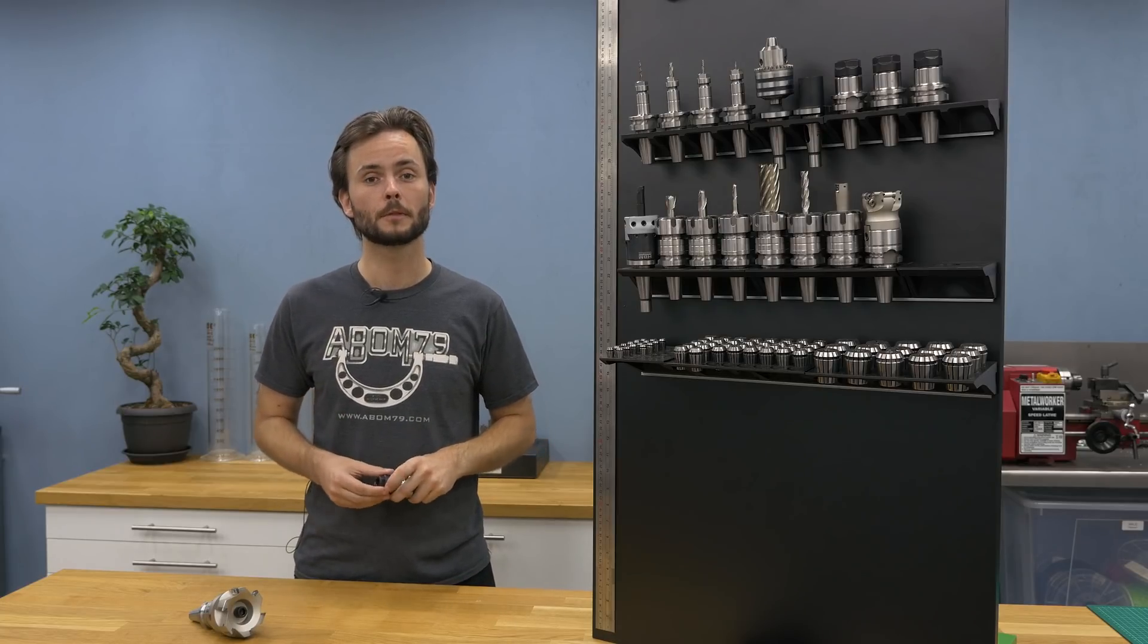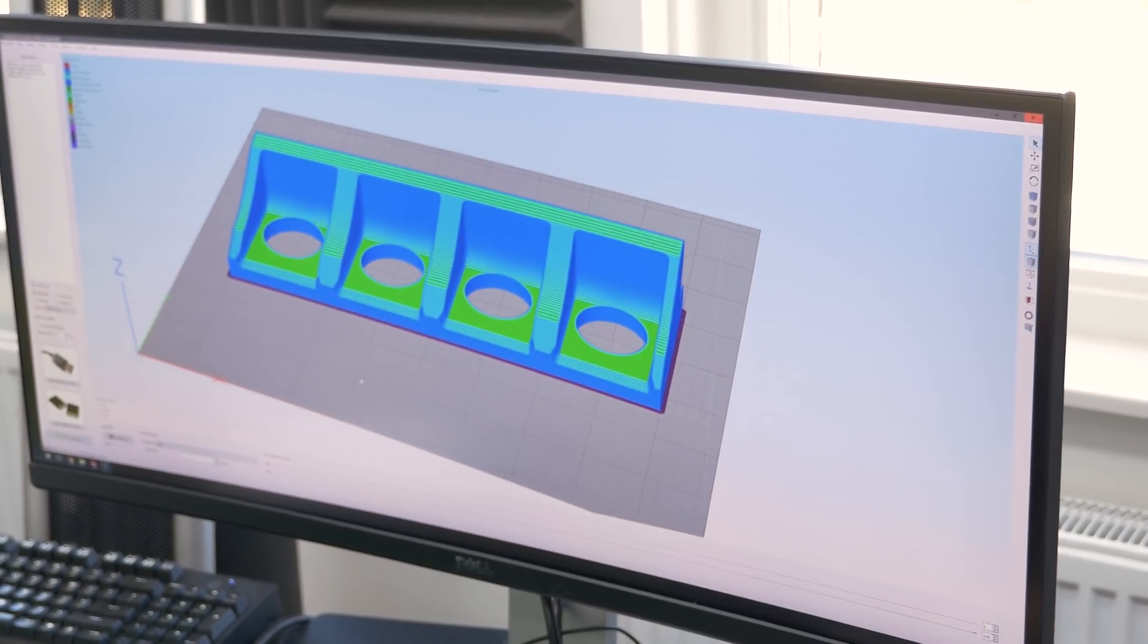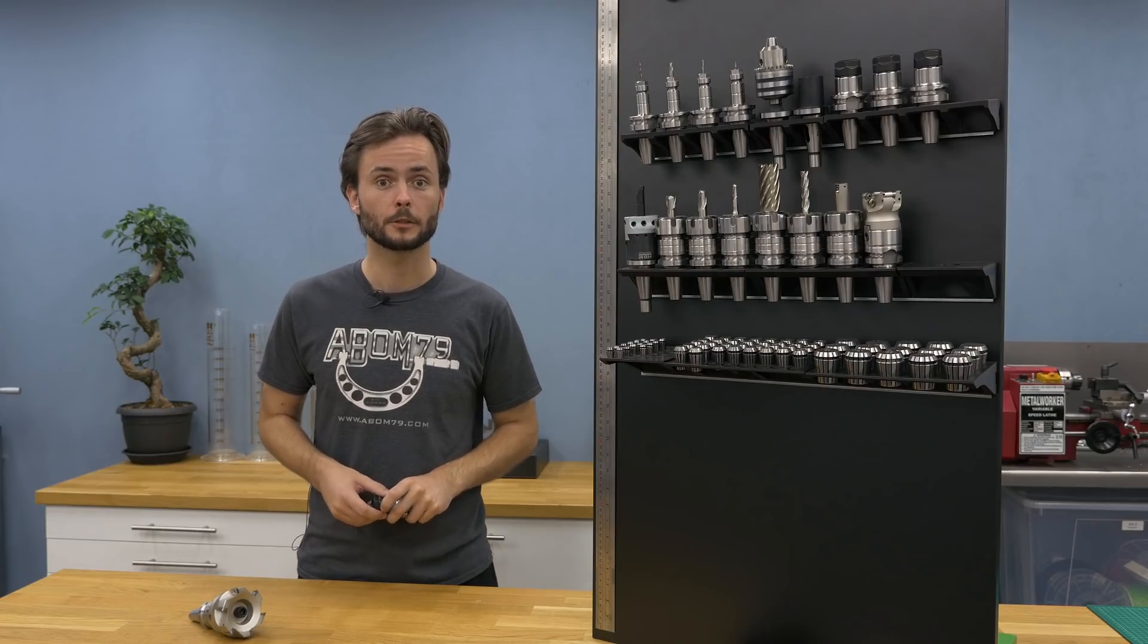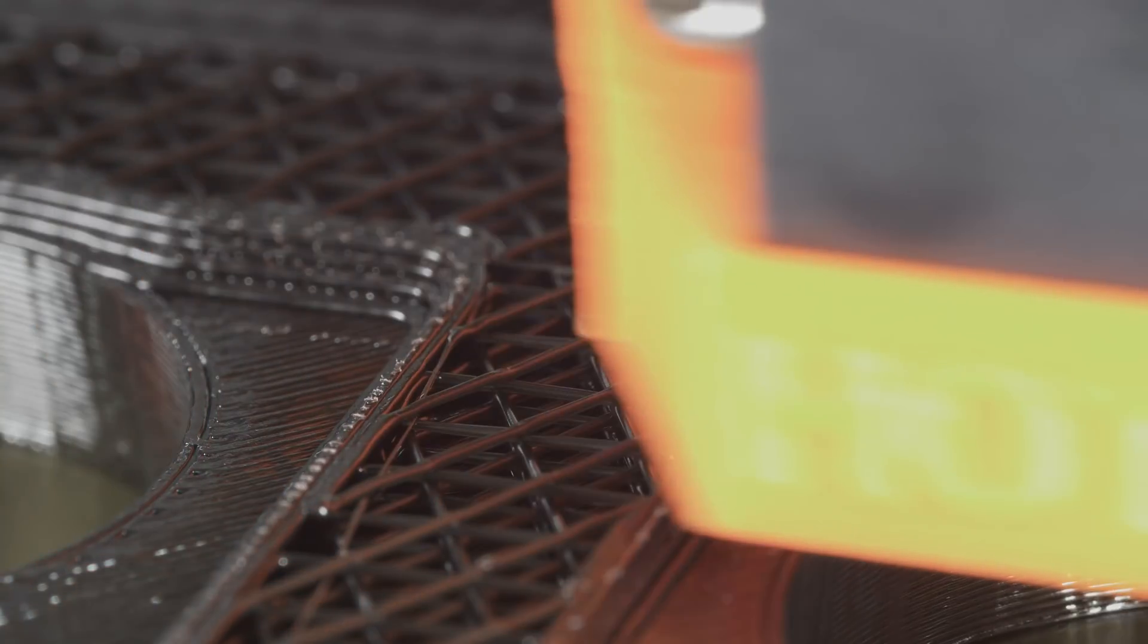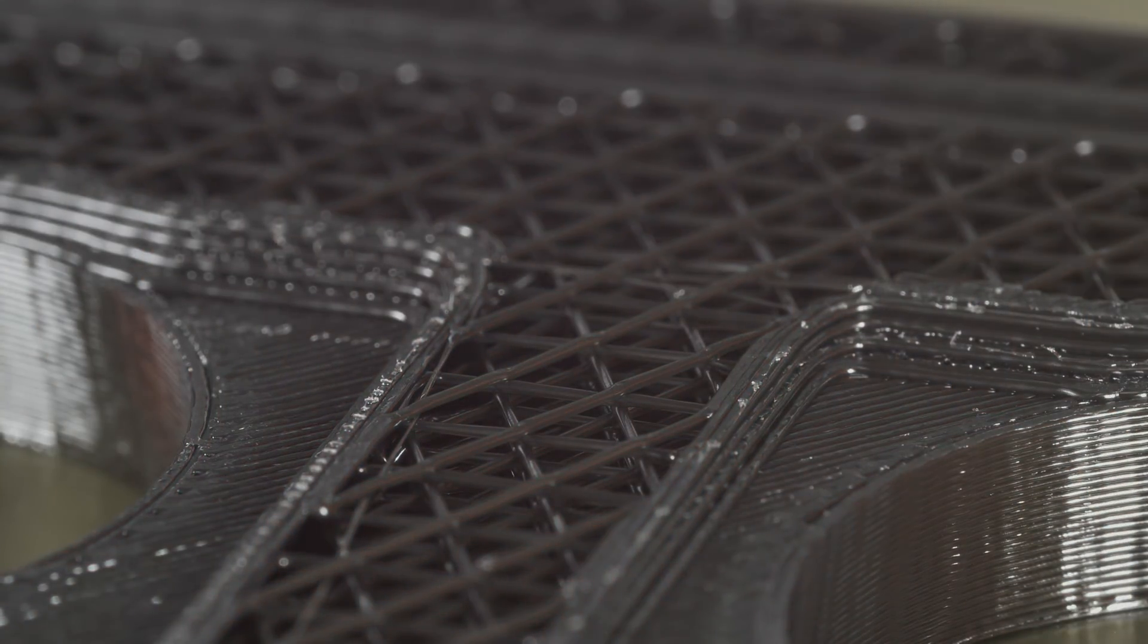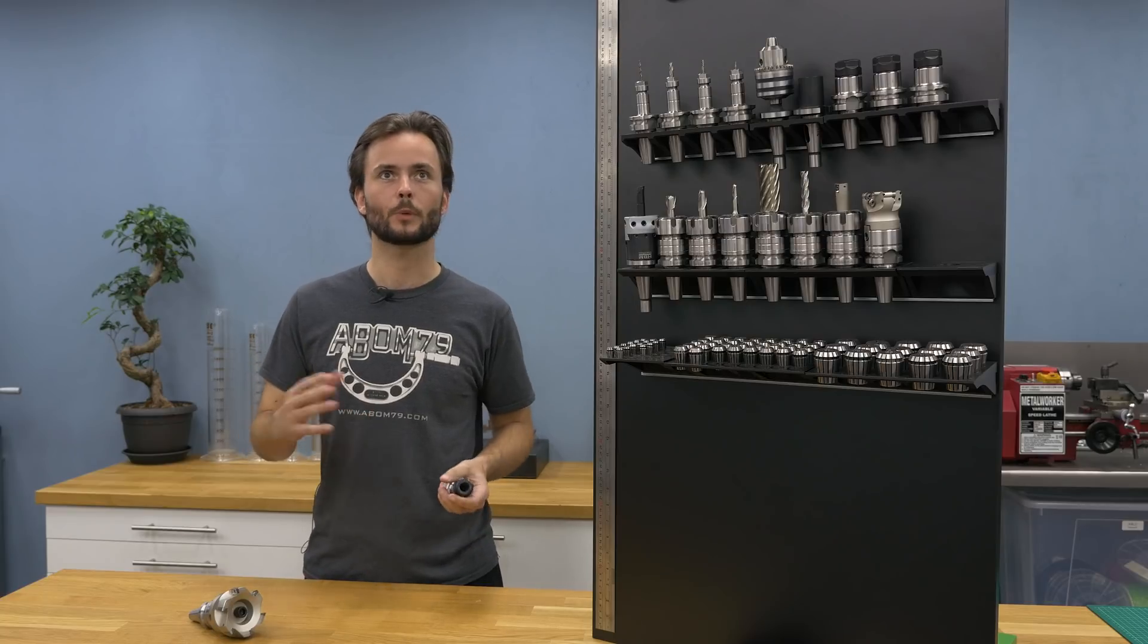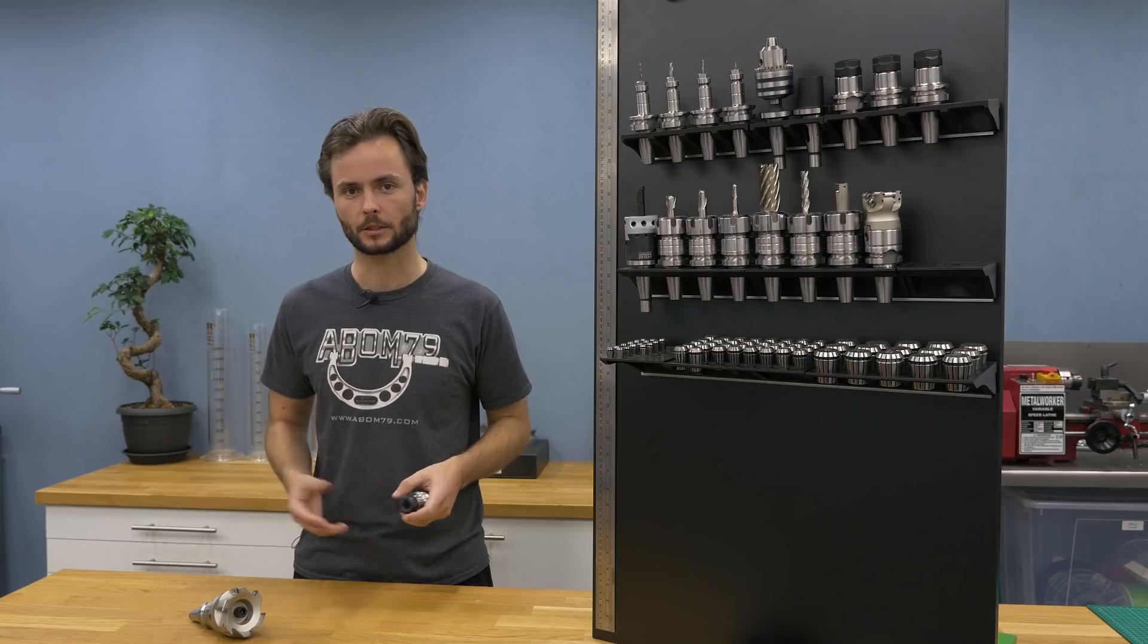For the printing itself, the settings that I used when it comes to the layers is I've got three top layers, three bottom layers, and two perimeters. And the infill I used was set to 15%, but anything between 15 and 20 is fine. You can do more, but it's not really necessary.